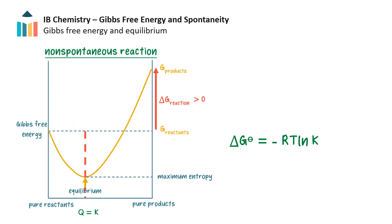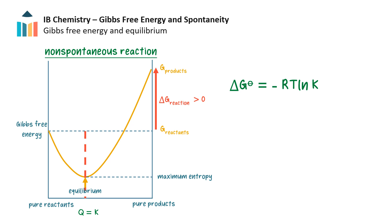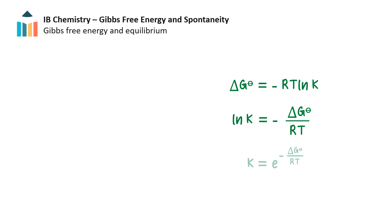The opposite is true for a non-spontaneous process, where delta G is positive — the equilibrium mixture has a higher proportion of reactants. This equation allows us to use the equilibrium constant to solve for the change in Gibbs free energy and therefore determine the spontaneity of a reaction. We can also rearrange this equation and solve for K, and using this equation we can use the change in Gibbs free energy to solve for the equilibrium constant and have an understanding of the position of the equilibrium — the relative proportions of reactants and products.